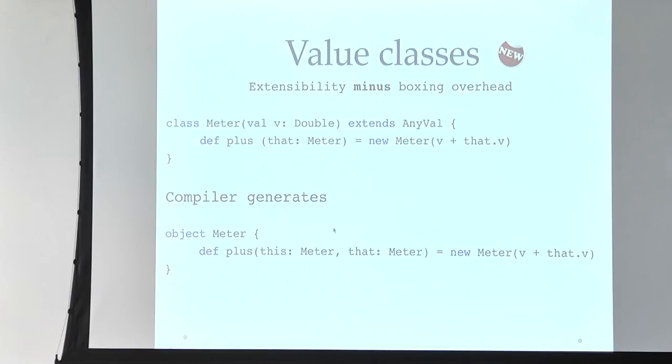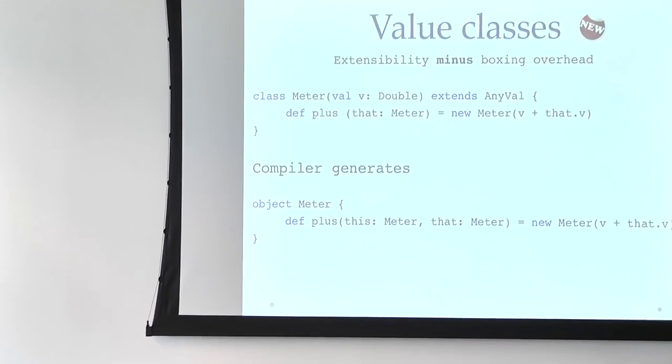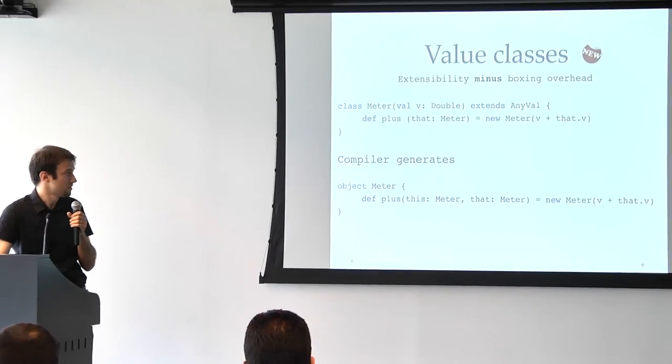Ten minutes. Value classes allow us to extend the functionality of any value type, such as an integer, without actually creating any boxing overhead to it. So it basically allows us to get a better performance and stop thinking about performance every time that we want to make a safer code. So if you have an employee ID and a customer ID, if both of them are ints, you have the risk of actually mixing them in the code and using the wrong one. So it's better to maybe extend int and say that I have an employee ID type, but I do not want to have the overhead of wrapping it up with an object. So this is what we can do now.